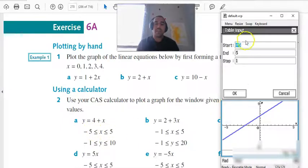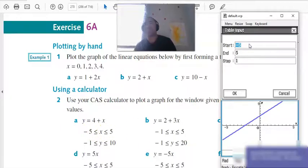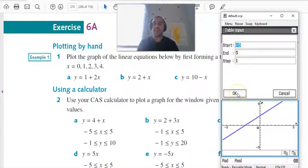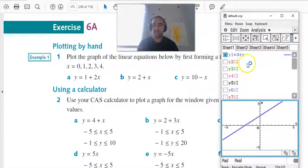I've already got this readily available because I've already had some conversations with some of you guys in regards to this. Your step is always going to be one, and you're going to press OK. Now, nothing will happen at this point because what we have done is just told the calculator to do it from negative 5 to positive 5.